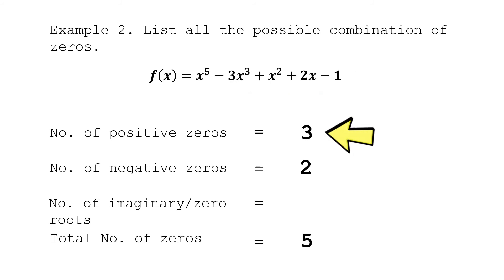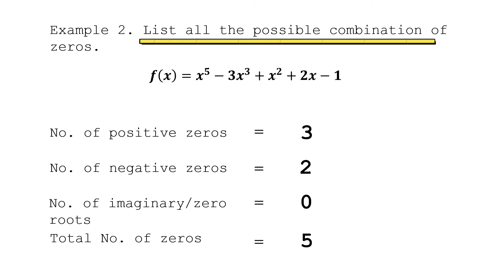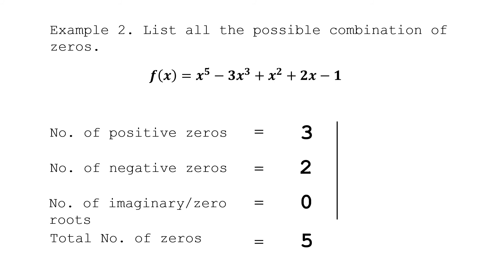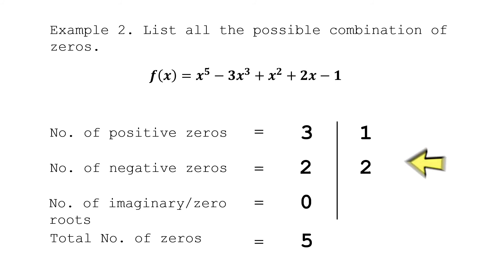Since we have 3 positive zeros and 2 negative zeros — a total of 5 — we automatically have zero imaginary or zero roots. This is the first combination. For the second combination, we deduct an even integer from the positive zeros: 3 minus 2 equals 1. We keep the negative zeros at 2. Since 1 positive and 2 negative gives only 3, the remaining 2 automatically become imaginary or zero roots.